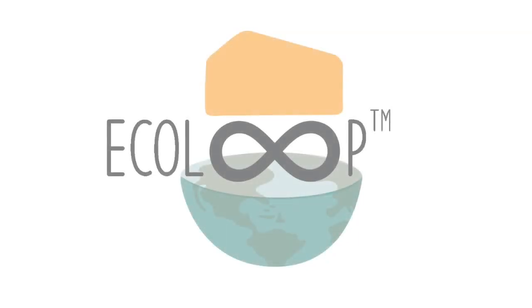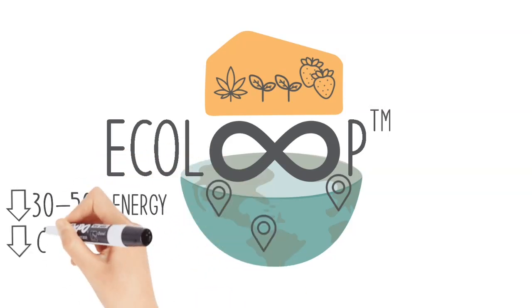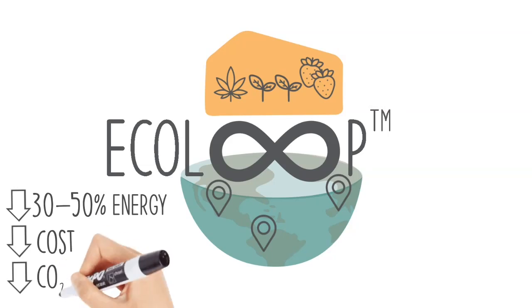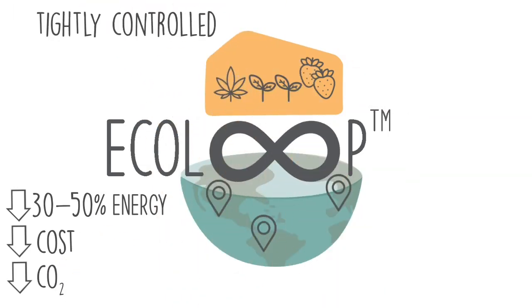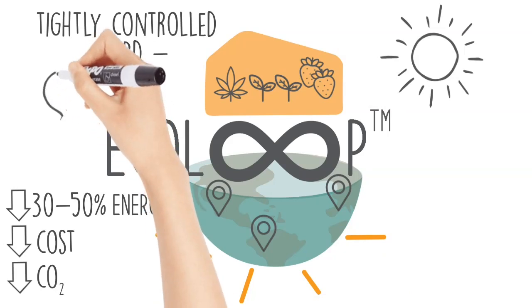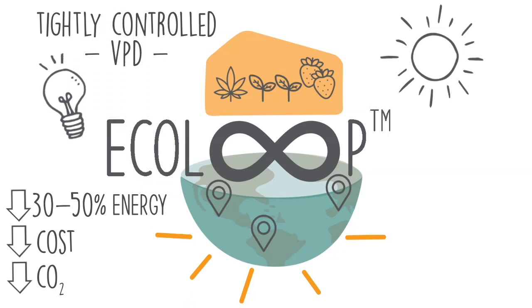As you can see, the Ecoloop is a fully integrated solution for growing any crop in any location with less energy required than traditional systems. It saves you operational costs and reduces your environmental footprint. It allows you to grow in a tightly controlled environment based on vapor pressure deficit and also takes advantage of the free light from the sun and free energy from the earth. It is a tool that combines simple principles, complex design, innovative technology and what nature can give us to grow better plants at a lower cost.